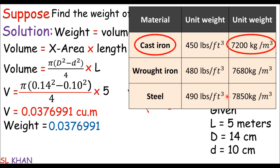You can see in this table. If the pipe is made of steel, you can use of course 7850 kg per cubic meters. This time the pipe is made of cast iron, so you can use 7200 kg per cubic meters in the same formula. So the weight equals 271.433 kg and that's it.